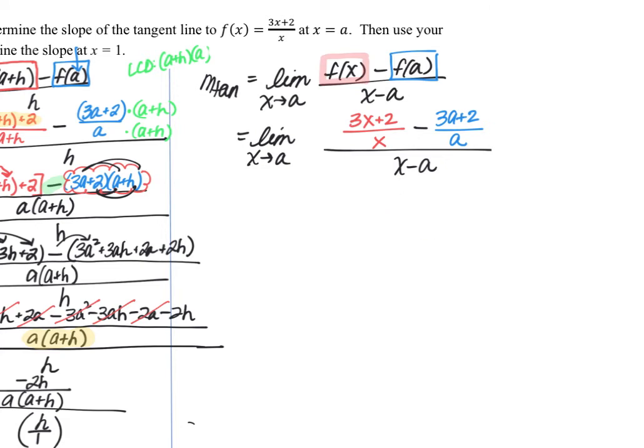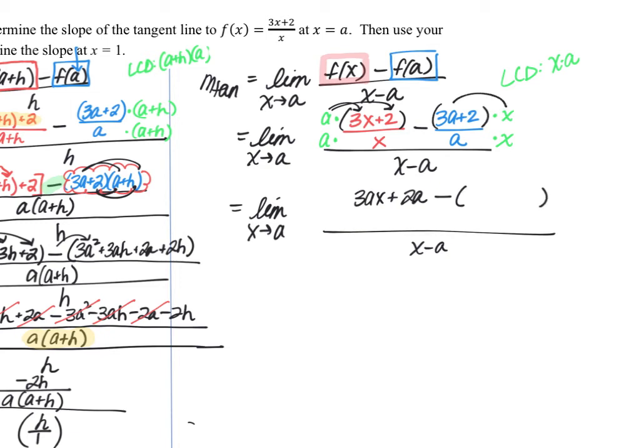So in the numerator I see that we have fractions, so we're going to get a common denominator again. But this time our common denominator is just x times a. So I just have to multiply my first fraction by a over a and my second fraction by x over x. And that is usually the case. Look at this, you guys, how the algebra is a little bit cleaner here. It's not quite as messy because our common denominator is a little bit simpler. So if we multiply a times the quantity 3x plus 2, we have 3ax plus 2a. And then I'm going to have minus, so make sure you've got those parentheses. We'll go ahead and distribute that x in, which will give us 3ax plus 2x. And then this is all over the common denominator of x times a.